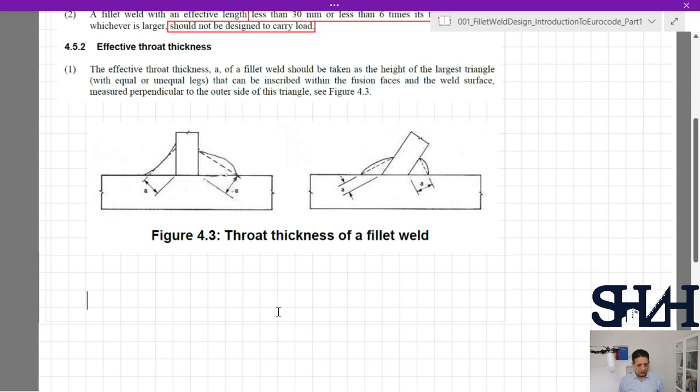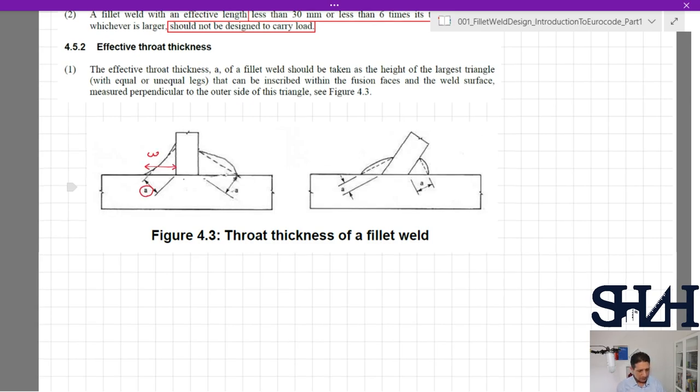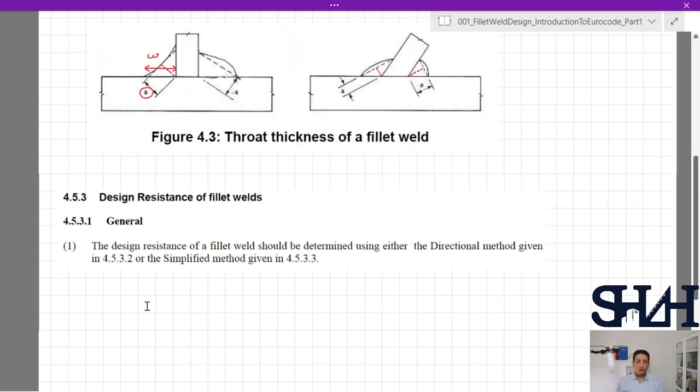In Figure 4.3, we can see the throat thickness of a fillet weld. So here we can see that this is written as A. And if we assume this is the leg, here also you can see how it is interpreted.